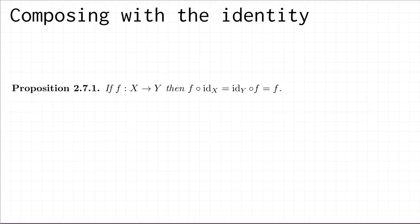In the last video we met the identity function. If you have a set X, there is an identity function — whose domain and codomain were both X — whose rule was "do nothing": the identity function applied to little x is just little x again. If we have a function f from X to Y, then we can do two different compositions.